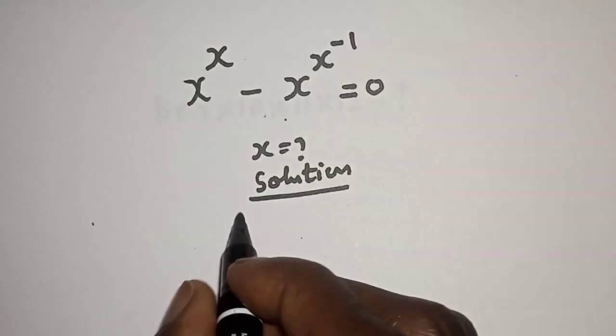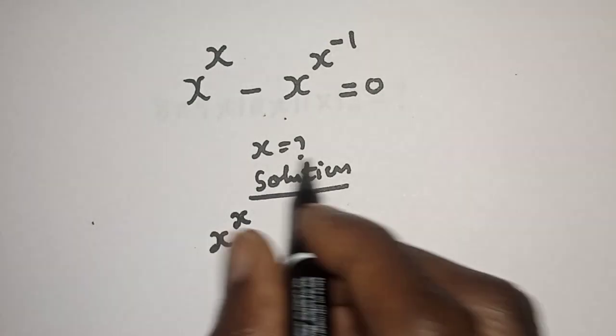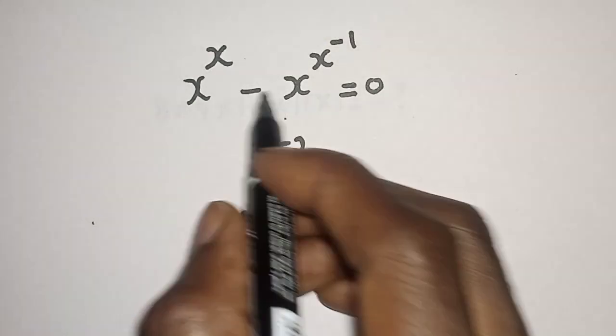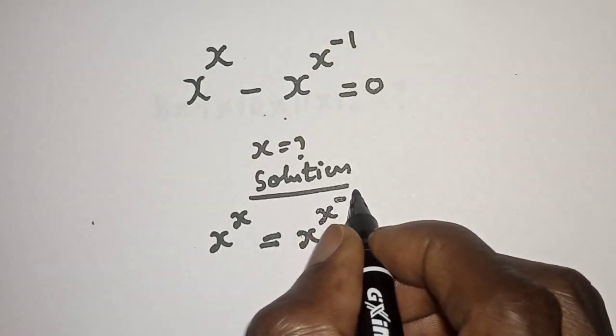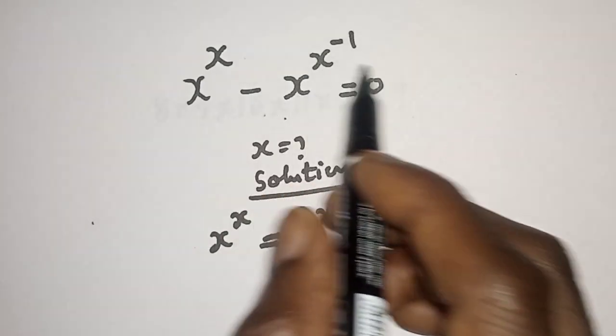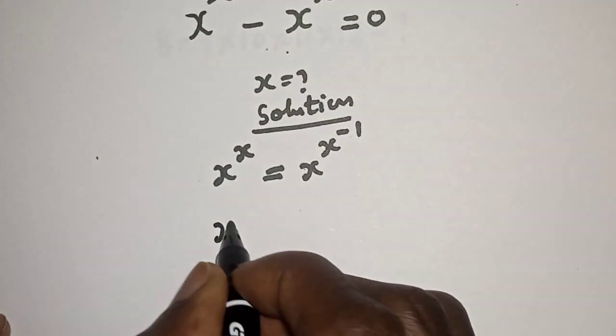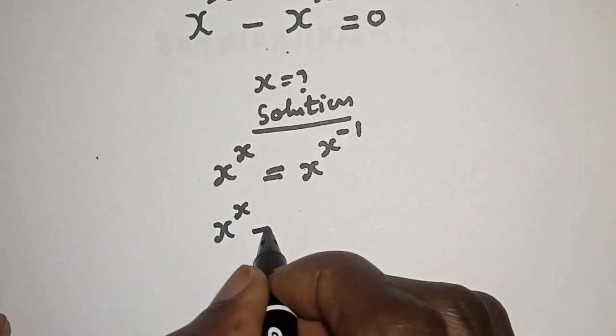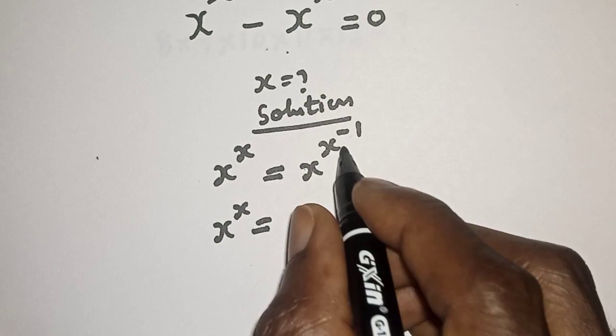We have the given equation s raised to power s is equal to s raised to power s raised to power minus one. Because if this minus goes up to the other side it becomes plus, this is s raised to power s is equal to s raised to power s raised to power minus one.